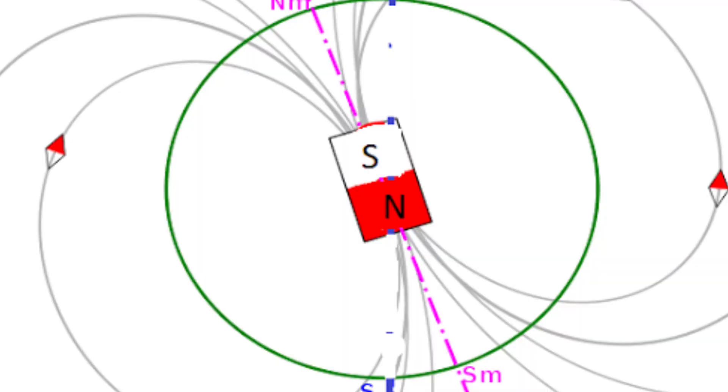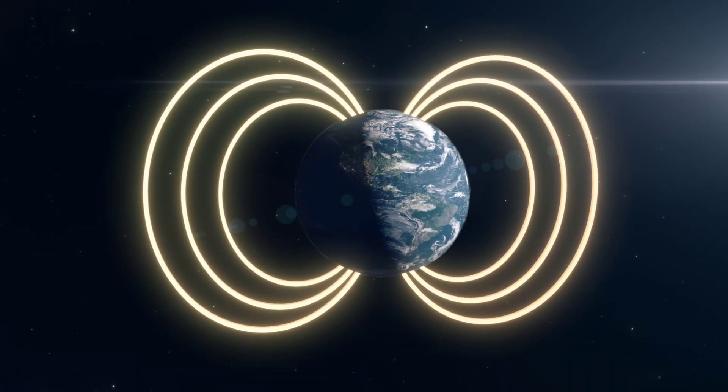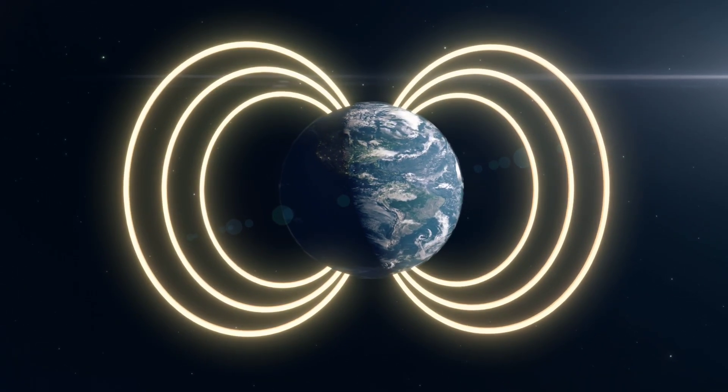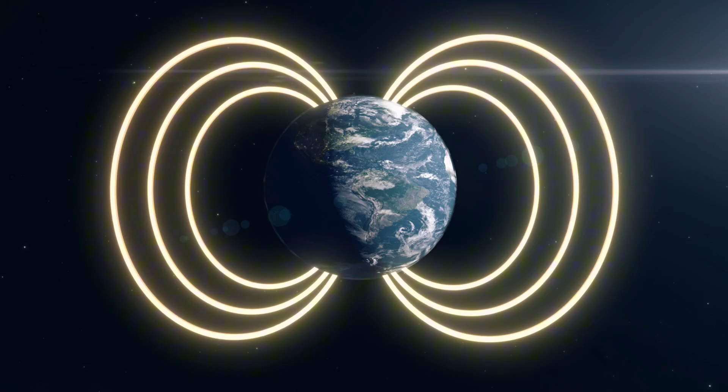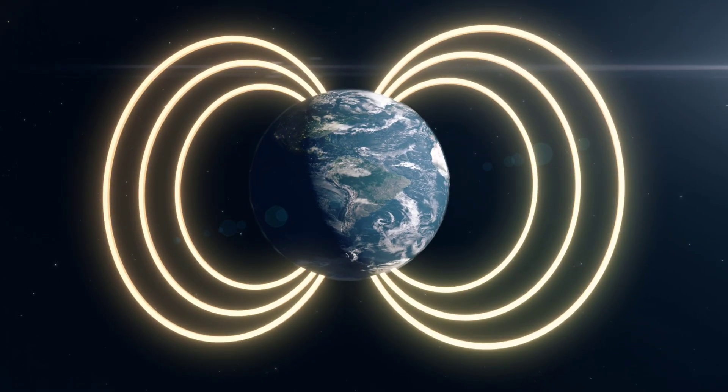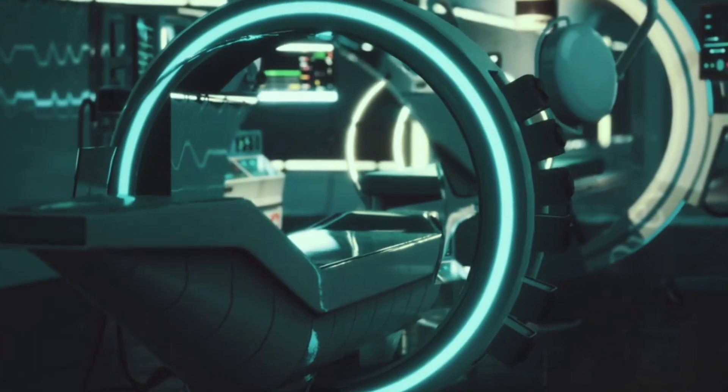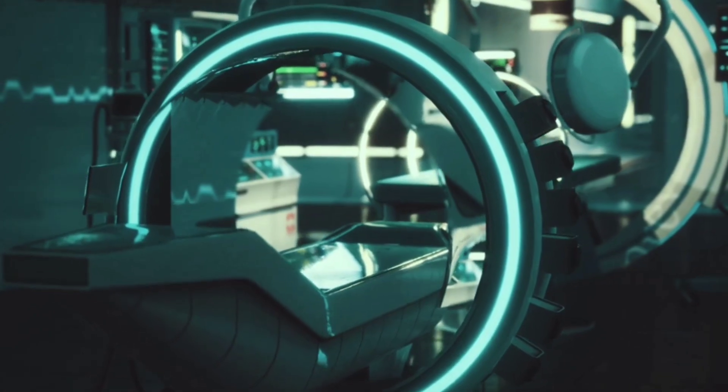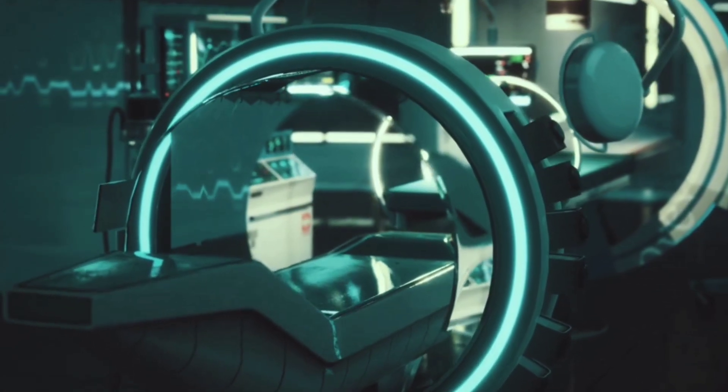The strength of a magnetic field is measured in teslas. The Earth's magnetic field measures only about 0.00005 teslas, which is relatively weak. But the resistive magnet created by China's High Magnetic Field Laboratory generates an astonishing 42.02 teslas.